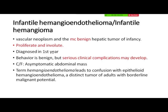Infantile hemangiomas are vascular neoplasms — the most common benign hepatic tumor of infancy. Their characteristic is that they proliferate and then involute, like cutaneous and cavernous hemangiomas. They involute by age one year and are first diagnosed in the first year only. They are benign, but we have to diagnose them because serious clinical complications may occur. The terms hemangioendothelioma and infantile hemangioma can be used interchangeably. They are classified into three types — multifocal, focal, and diffuse — based on GLUT-1 receptor positivity: multifocal infantile hemangiomas are GLUT-1 positive, others are GLUT-1 negative.